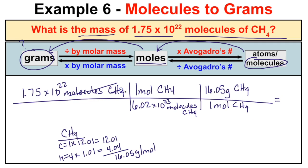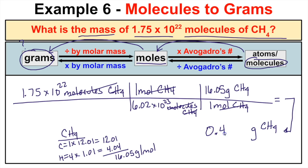Moles of CH₄ on top cancels with moles of CH₄ on the bottom, and our final answer will be in grams of CH₄, which is what we were trying to find — mass is always in grams. We take 1.75 × 10²² divided by Avogadro's number, then multiply by 16.05, and we end up with 0.467 grams of methane. So that many molecules of methane has a mass of 0.467 grams.